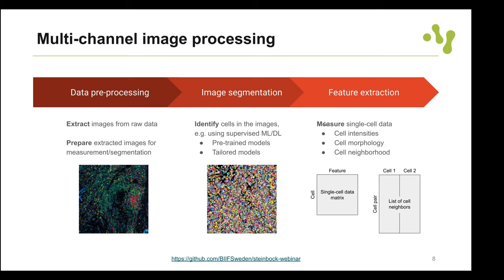That way you've already extracted your first single-cell data from multiplex tissue images. Other things one can measure include morphology, using the 'steinbock measure regionprops' command. By default this computes area, centroid, major/minor axis, and eccentricity of each cell. You can also explicitly specify properties — for example, just area and centroid — by adding those to the command.